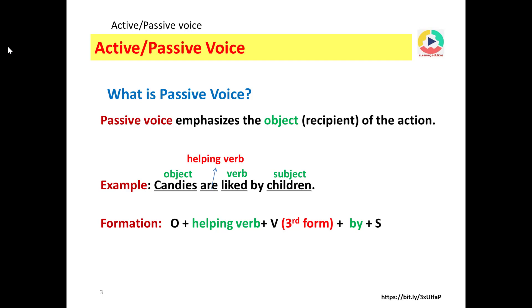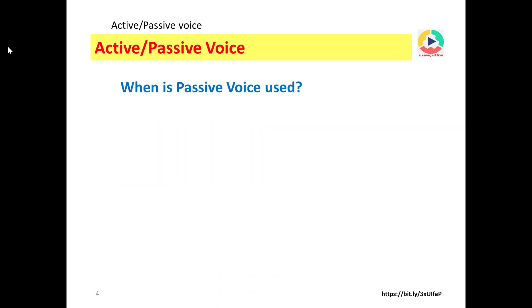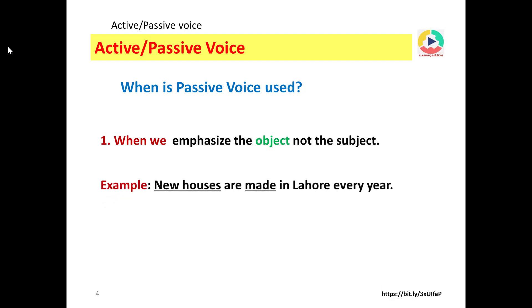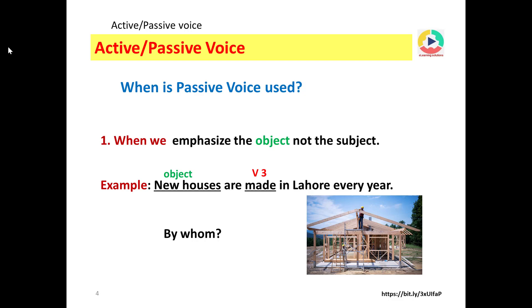When is passive voice used? Number one: when we emphasize the object, not the subject. Example: new houses are made in Lahore every year. Houses is the object, made is the third form of the verb. By whom? We don't want to know. We are discussing just the object — we are not concerned about who is making the houses.